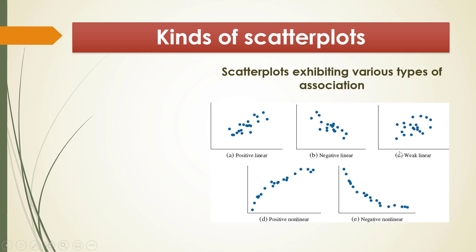On picture C, we see that these points kind of go everywhere — they do not cluster around a specific straight line. It's kind of wide from all four sides. So we say this is a weak linear association, meaning x and y don't have a clear linear relationship.